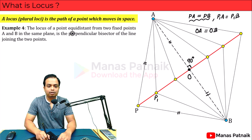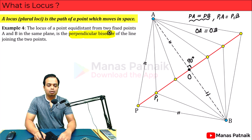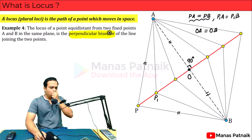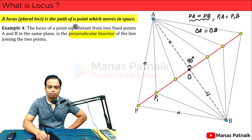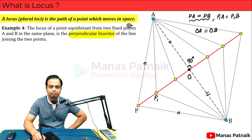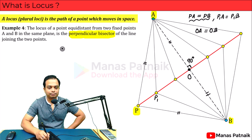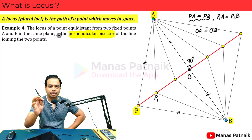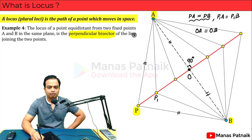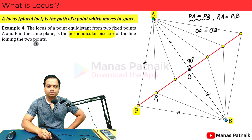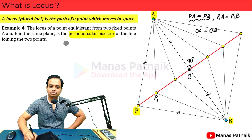At the same time, if you place a protractor at that intersection, you'll realize that the two lines subtend an angle of 90 degrees between them. Since the angle is 90 degrees, what you have is a perpendicular bisector. Formally: the locus of a point equidistant from two fixed points A and B in the same plane is the perpendicular bisector of the line joining the two points.